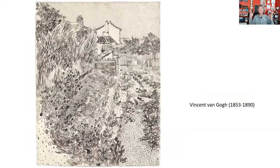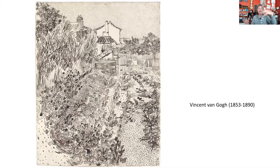We're going to finish this segment with drawings by Vincent Van Gogh. Not many people know how much drawing he did — a ton of ink drawing, lots of preparatory drawings for his paintings. Doesn't this remind you of David Hockney's work that we looked at earlier? He picked almost different pen strokes and different amounts of ink to lay down in order to get a nice variety.